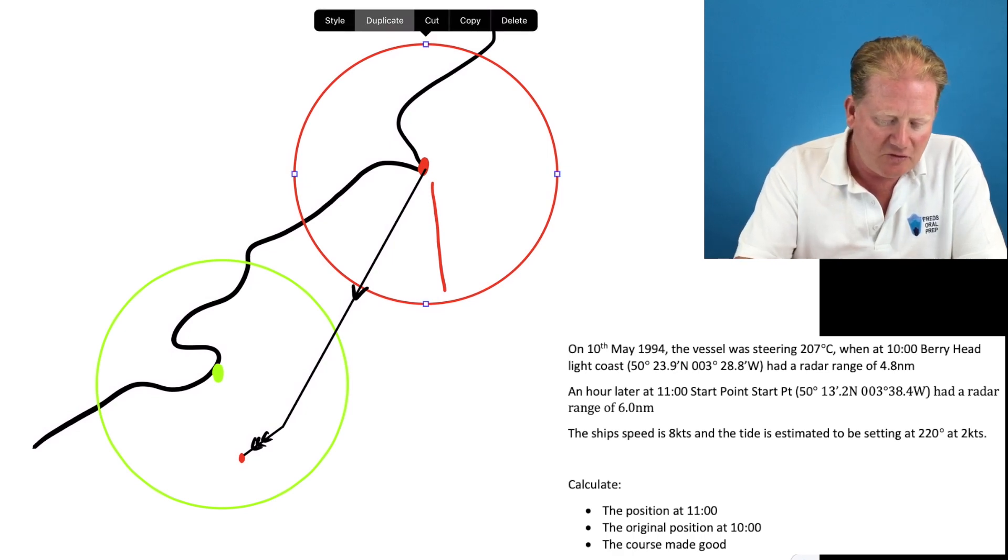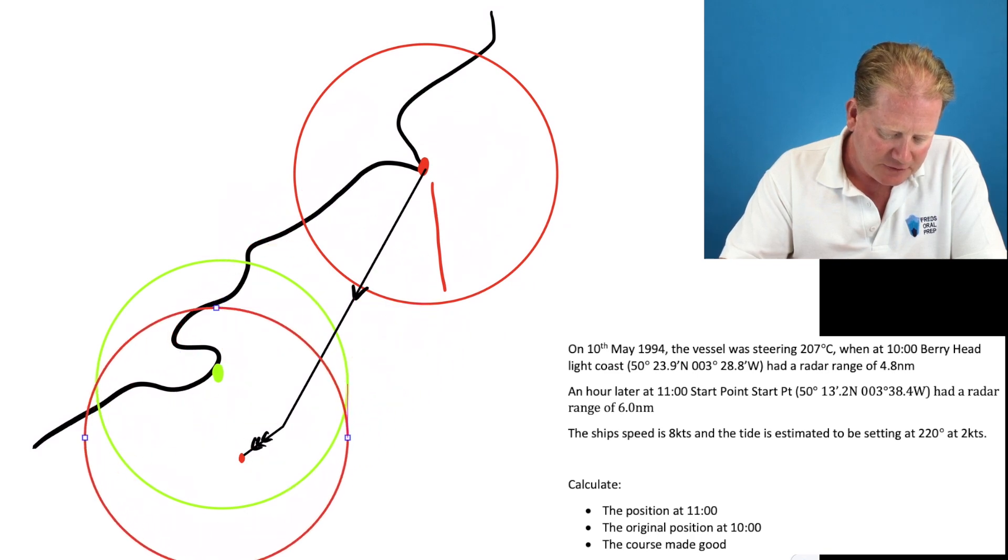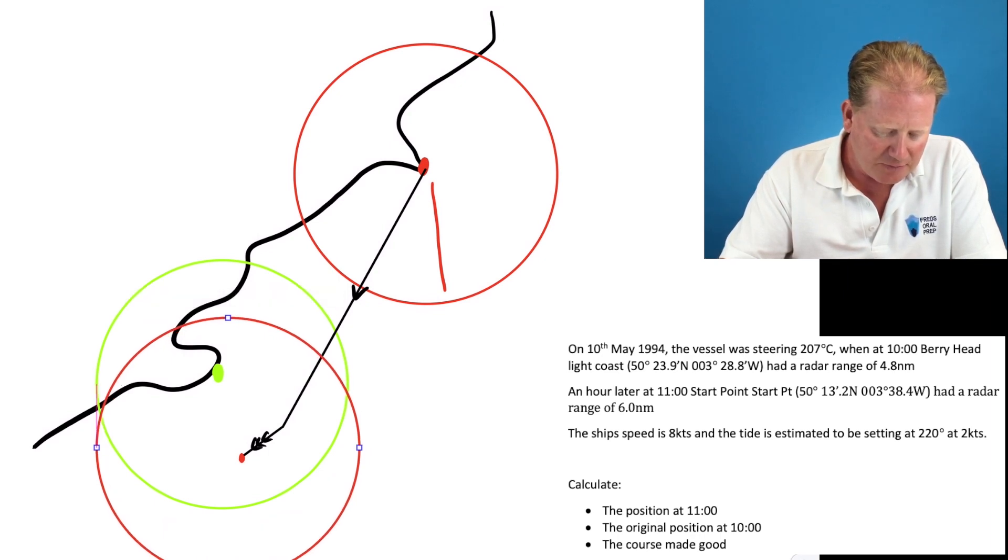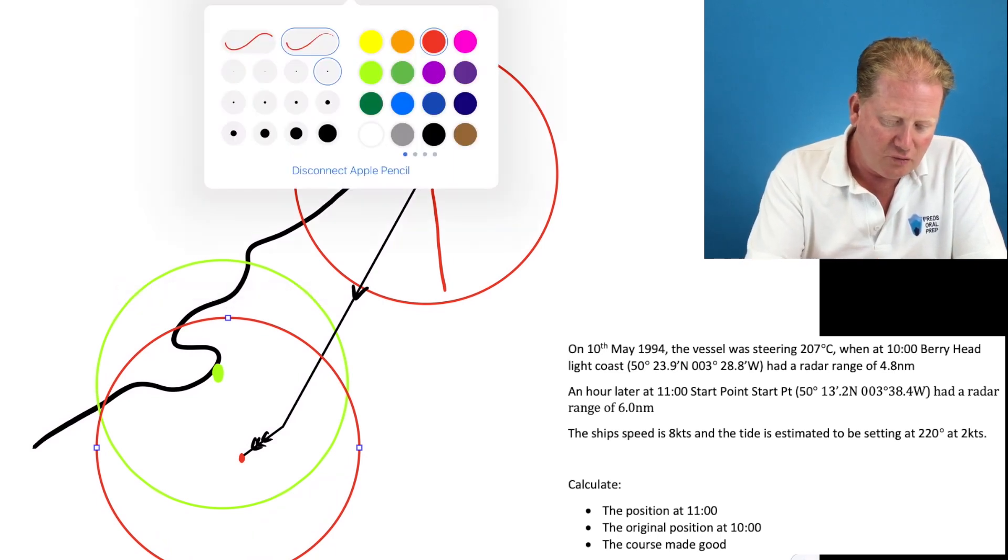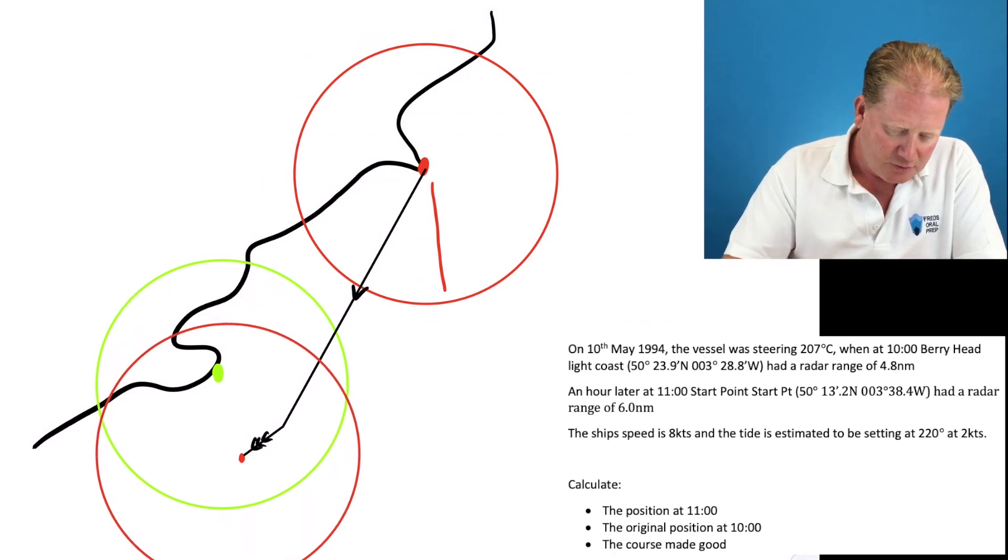And it will give us probably two positions. Normally, one you can discount. So in this case, we have got two possible positions. We've got one here, which is on the land, and another one here. So that is our position at 11 o'clock.